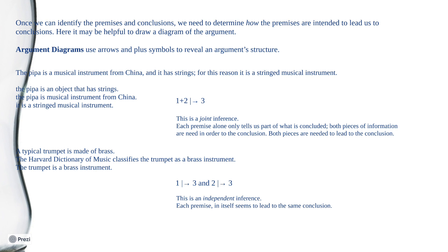Contrast that with this example: 'A typical trumpet is made of brass. The Harvard Dictionary of Music classifies the trumpet as a brass instrument. Thus, the trumpet is a brass instrument.' In this case, the first piece of information — a typical trumpet is made of brass — can independently lead us to the conclusion. And the second line of evidence — the Harvard Dictionary of Music says it's a brass instrument — can also independently lead to the same conclusion. So our diagram would have one arrow to three and two arrow to three. This is called an independent inference, since each premise in itself is able to lead to the same conclusion.